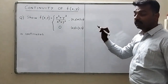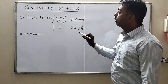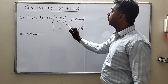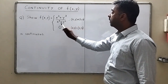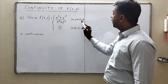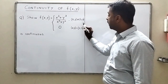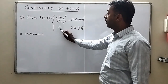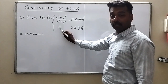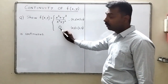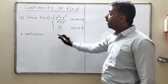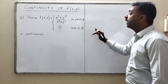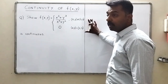Let me start with a very simple problem. This is f(x,y) equal to x³ plus y³ upon x² plus y² when x and y are not zero, and when x and y are zero zero then the function has value equal to zero. We have to check the continuity of this function.